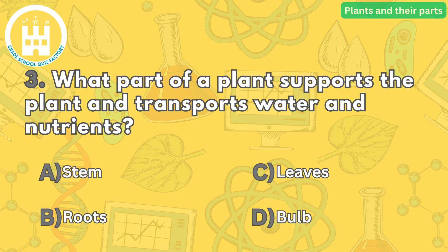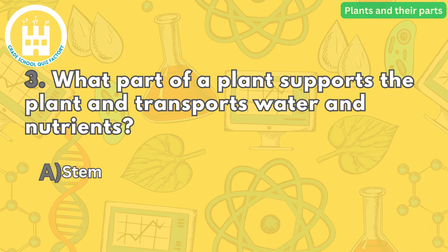Question number three: what part of a plant supports the plant and transports water and nutrients? The correct answer is letter A. The stem provides support to the plant and holds up the leaves, flowers, and fruit. It also transports water and nutrients between the roots and the other parts of the plant.